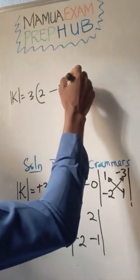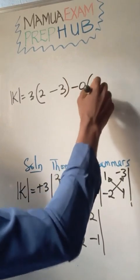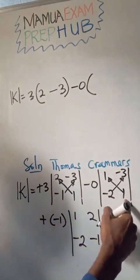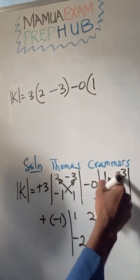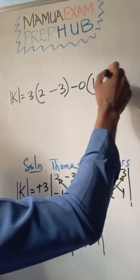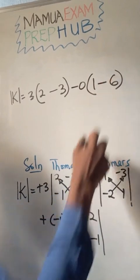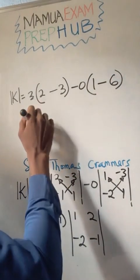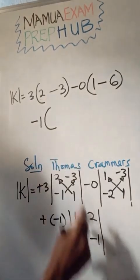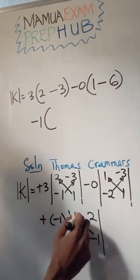I have minus 0. I have to multiply diagonally: 1 times 1 is 1, minus 2 times minus 3 is 6, so I will subtract. And lastly I have plus minus 1, so plus minus 1 means minus 1.